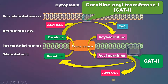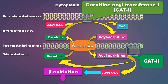Now we have activated fatty acid inside the mitochondrial matrix. The further fate of this acyl-CoA is called beta oxidation. All the enzymes required are present within the mitochondrial matrix, and this acyl-CoA undergoes a series of catabolic reactions, or oxidation, called beta oxidation, which will be explained in the next video.